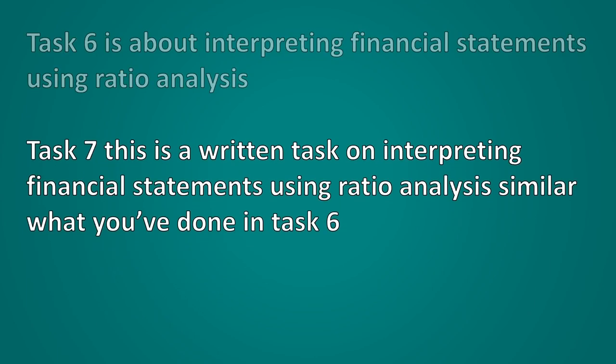Task seven is the last task — a written task on interpreting financial statements using ratio analysis. Similar to task six but this time you'll have to write about them. One of the key parts to doing well is to follow a well-rehearsed format. It is worth 22 marks and getting at least 50% on this task should be very easily achieved. You need to understand what goes into each ratio, what can affect it, and what it means to the business.